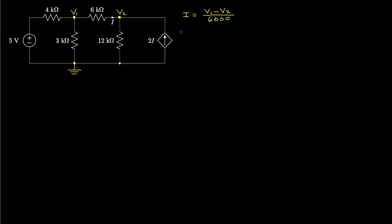Next, we'll write our node voltage equations, beginning with the equation at the node associated with voltage V1. The current flowing out in this direction is V1 minus 5, since we have 5 volts here relative to ground, divided by the resistance, which is 4,000 ohms. Then we have the current flowing in this direction, which is V1 minus V2 over 6,000. And the current flowing in this direction is V1 minus 0 over 3,000, or simply V1 over 3,000.